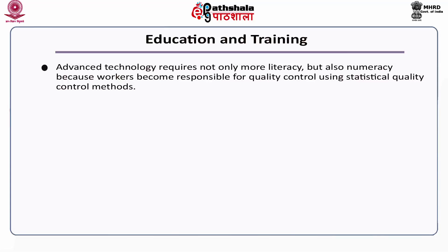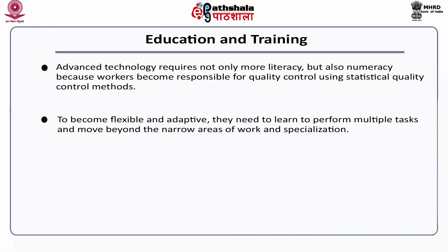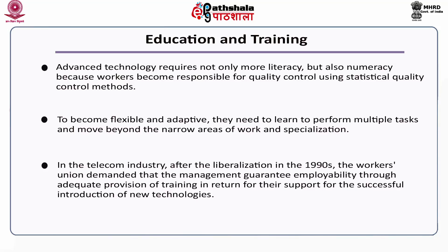Regarding education and training, advanced technology requires not only more literacy but also numeracy, because workers become responsible for quality control using statistical quality control methods. To become flexible and adaptive, they need to learn to perform multiple tasks and move beyond narrow areas of work and specialization. In the telecom industry, after liberalization in the 90s, workers' unions demanded that management guarantee employability through adequate provision of training in return for support for the successful introduction of new technologies.